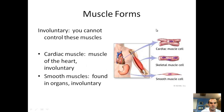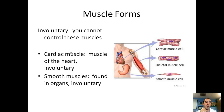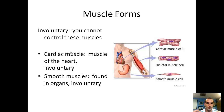Now let's look at some involuntary muscles — these are ones that you cannot control. An example would be your cardiac muscle. A neat thing about cardiac muscles is that if you grew them in a petri dish, they would have a heartbeat. If you put one cardiac muscle that was beating near another one, they would start to sync up their beating motion and beat at the exact same time.